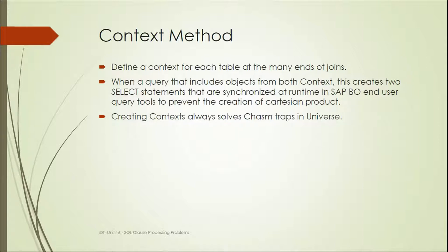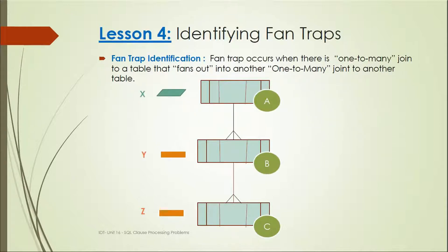Now let's identify the fan trap. Fan trap occurs when there is a one-to-many join from a table that fans out into another one-to-many join to another table. If you see X, Y, Z: one table has one-to-many, and this table again has another one-to-many relationship.